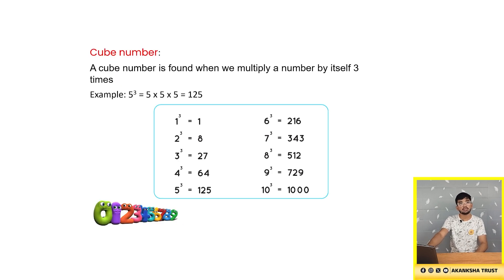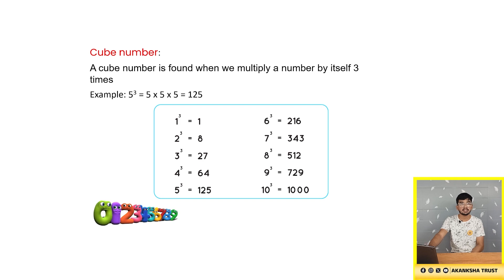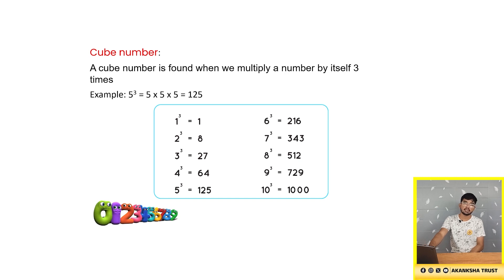Next, we'll learn about the cube of a number. The cube of a number is found when we multiply the number with itself thrice — that is, 5 cube, which is 5 into 5 into 5, which is 25. The cubes of the numbers from 1 to 10 are given below.